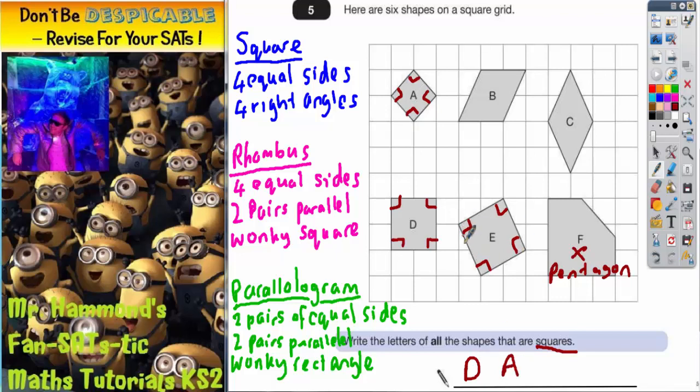And shape E has 4 right angles and 4 equal sides. You've got to be really careful that you don't just think that shape D is the only one because it's upright. Shape A and E are also squares even though they've been rotated round.